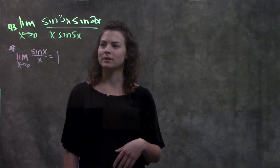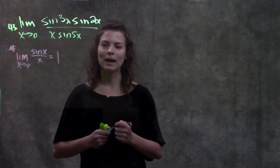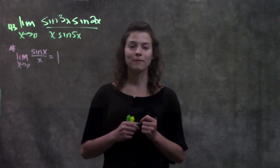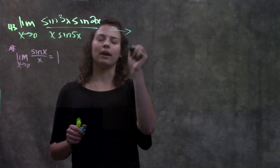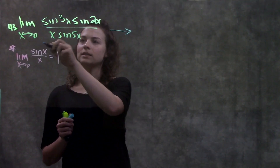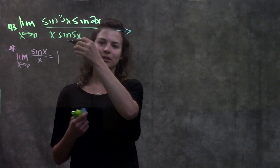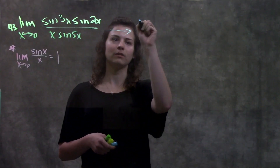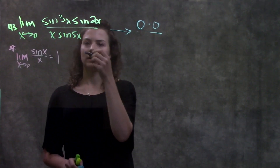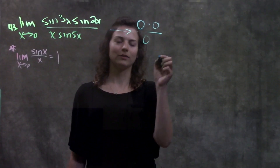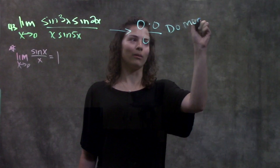It gives us the limit as x approaches zero of that whole big mess there. Remember when we have these types of problems and we're solving limits algebraically, our first step is to always try direct substitution — see what happens. I plug in zero wherever I see an x. On the top I get sine of three times zero, which is just sine of zero — that's zero — times sine of zero, again zero. On the bottom I get zero times sine of zero, also zero. So I have zero over zero; that's an indeterminate form, which means do more work.